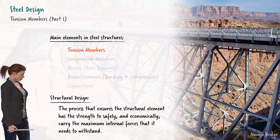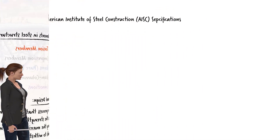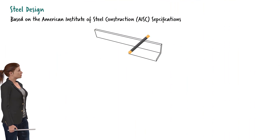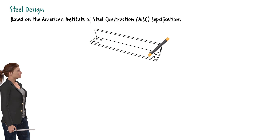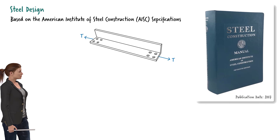The term structural design refers to the process through which we ensure that the member is strong enough to safely and economically carry the maximum forces it needs to withstand. In this and other lectures on steel design, we are going to use the design specifications published by the American Institute of Steel Construction — specifically, the 15th edition of the AISC Steel Manual.